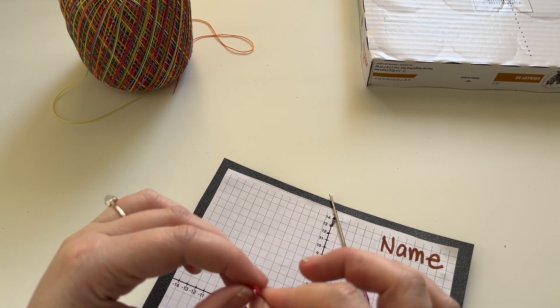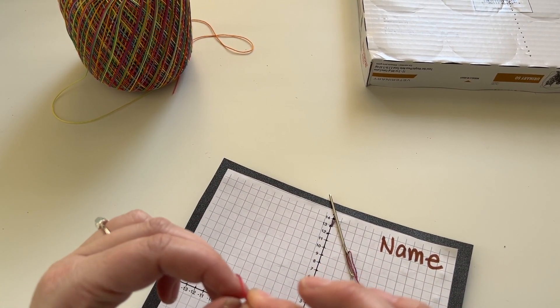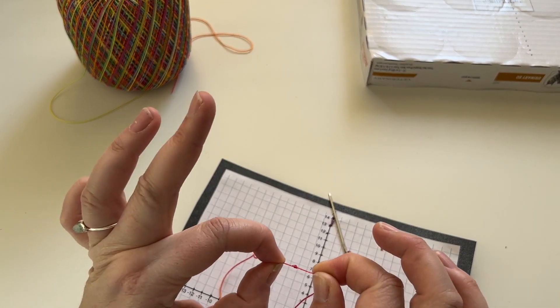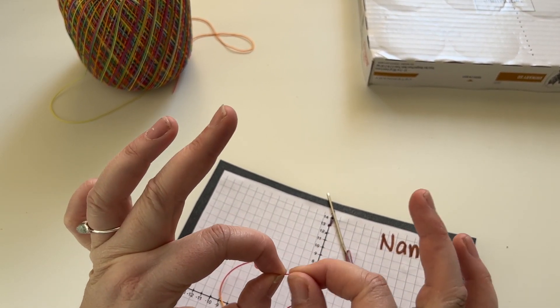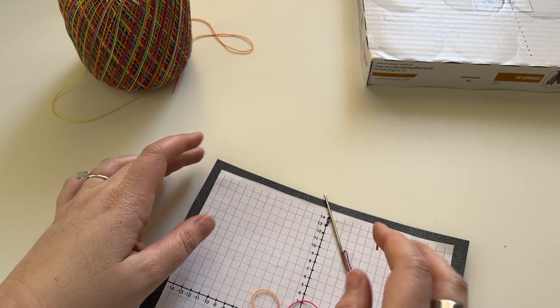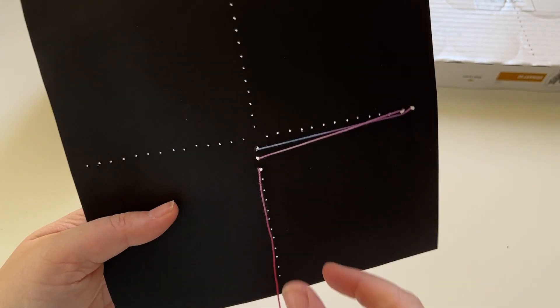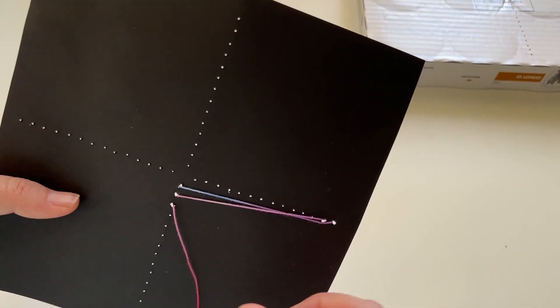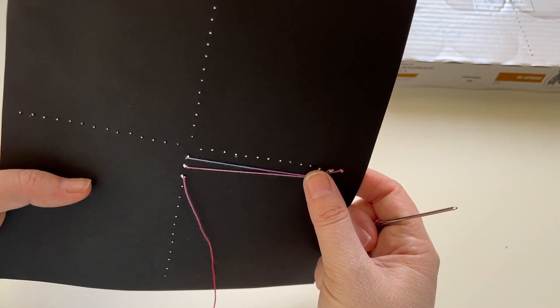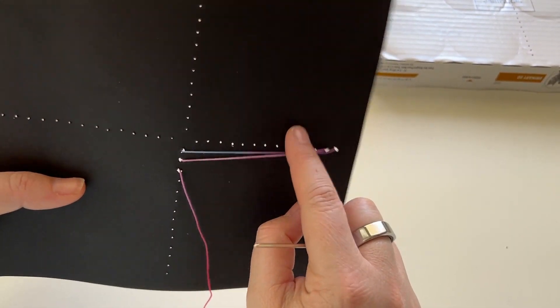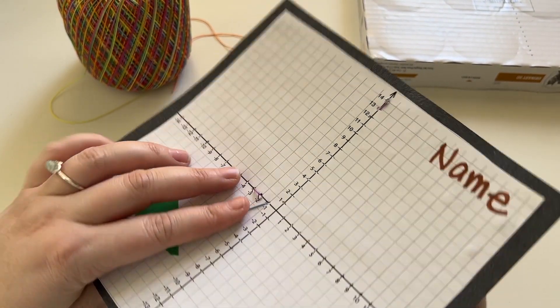That went a little too tight. At this point I don't think I can unknot that, so I'm just going to leave it as is and pull it through. Luckily it was not big enough. Now I'm going to go through the top at 12.